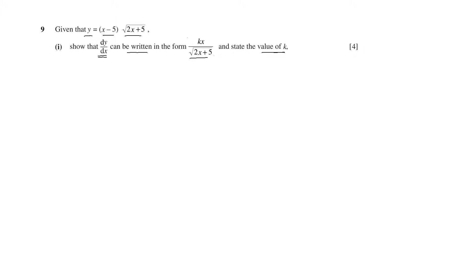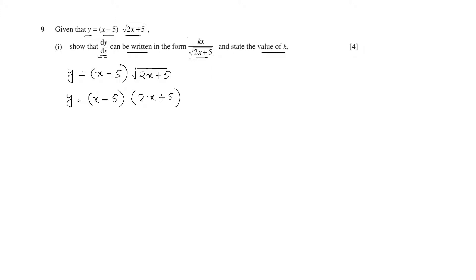The equation is y is equal to x minus 5 times square root of 2x plus 5. This can be written as y is equal to x minus 5 times 2x plus 5 whole to the power half. We can write it this way because square root of a can be written as a to the power half.